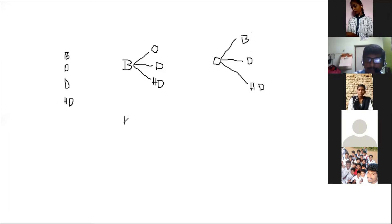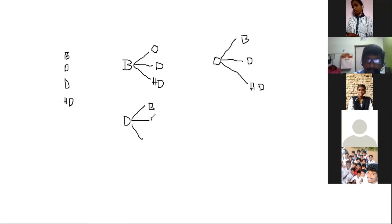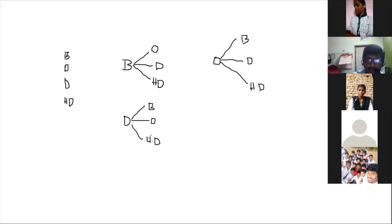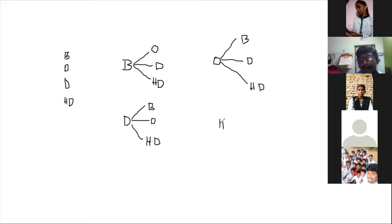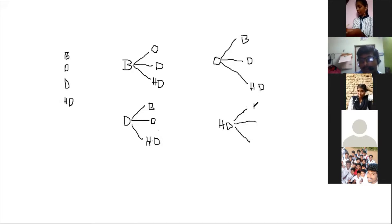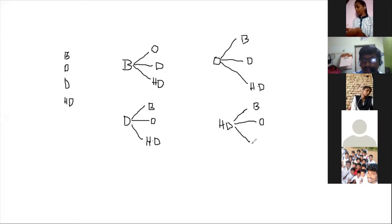Same way, coming to decimal — decimal has conversions to binary, decimal to octal, and decimal to hexadecimal. And from hexadecimal, we can convert to binary, hexadecimal to octal, and hexadecimal to decimal. So there are 12 types of conversions in total.